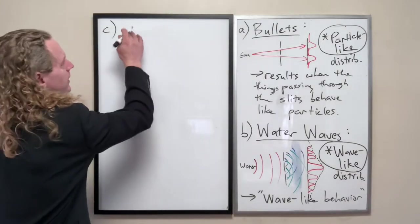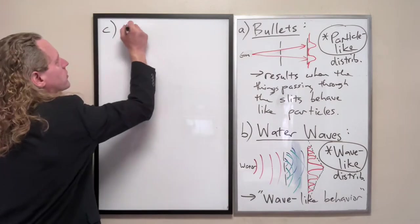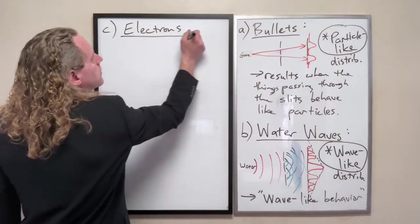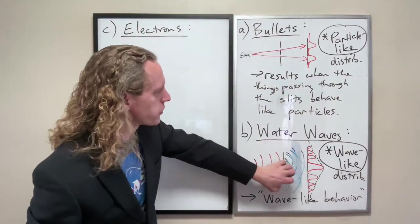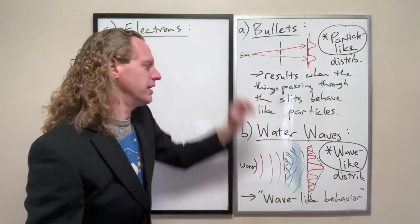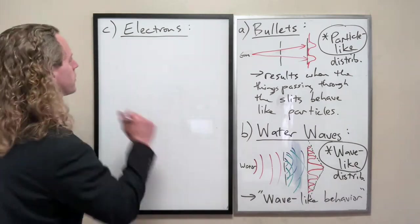So the next thing we're going to try is instead of bullets, instead of water waves, we're going to try electrons. And I'm not going to go through and derive this because we already know if that happens what had occurred, why it occurs. So I'm just going to explain what the results of these are.